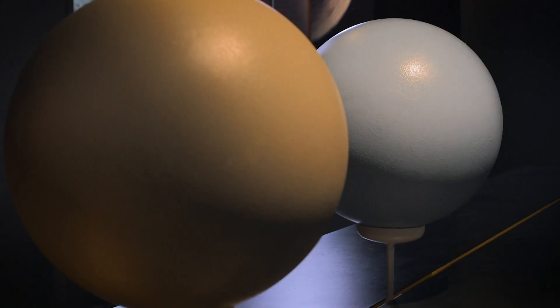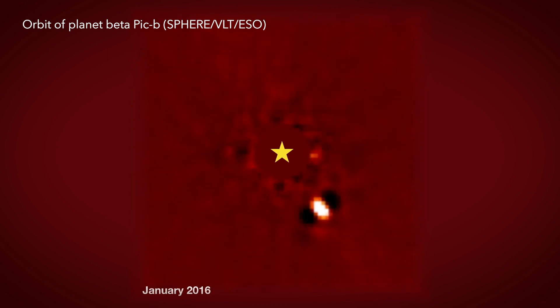Another technique is to observe, so to speak, the shadow of the planet as it passes in front of the star. This technique was pioneered at LESIA with a satellite called Coral which flew in 2006 and discovered several dozens of planets.